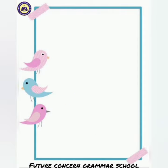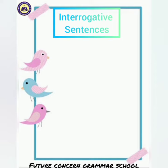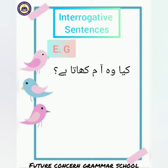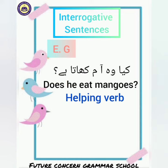Next are the interrogative sentences. Interrogative sentences, hum sawaliyah fikr ko bhi kehte hain, in mein question puchha jata hai. For example, 'kya wo aam khata hai?' translates to 'Does he eat mangoes?' The helping verb shifts to the start in interrogative sentences, so the arrangement would be: helping verb, subject, first form of verb, then object.